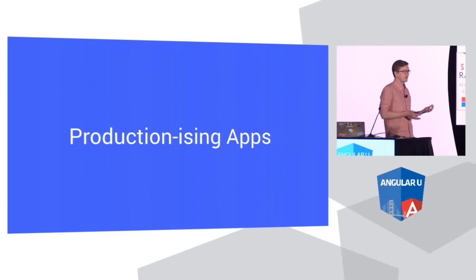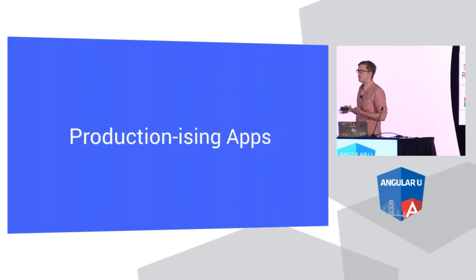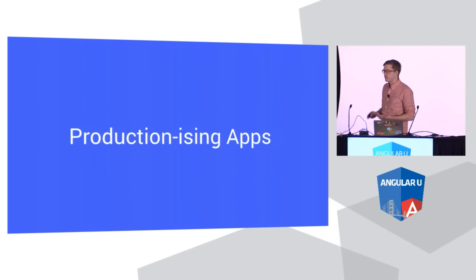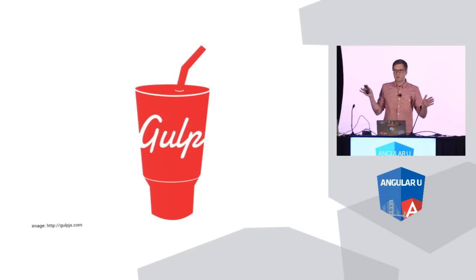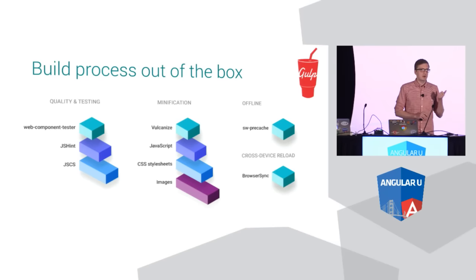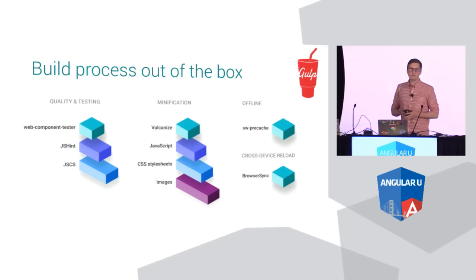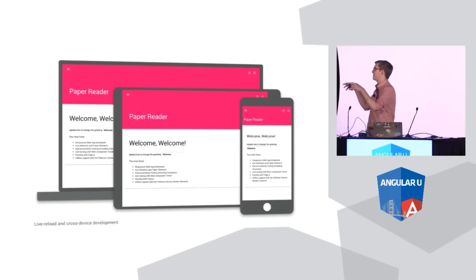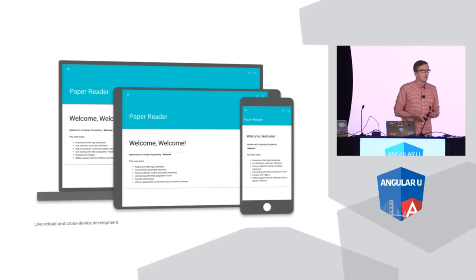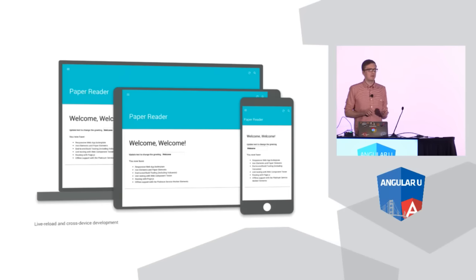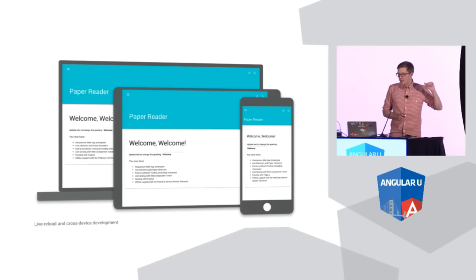The next thing I want to talk about is how you productionize this. You've got it looking and behaving and doing all the stuff you want — how do you compact it down to the smallest thing possible to deliver a fast experience to your users? For Starter Kit, we're big fans of Gulp, so we've built a whole Gulp build process that ships with it. Out of the box, you get support for testing your components using Web Component Tester, code quality using JSHint and JSCS, support for Vulcanize — our tool to concatenate and minify all of your components — and Browser Sync, which live reloads any page looking at your current URL as you're changing things in your editor, and also synchronizes clicks and scrolls across devices.